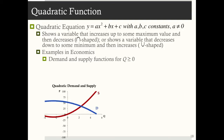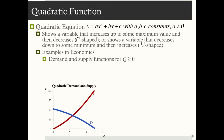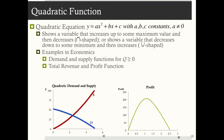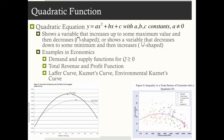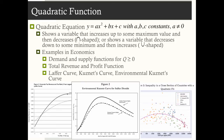We use quadratic functions to represent demand and supply, and for total revenue and profit. We also use it to show things like the Laffer curve, the Kuznets curve, which shows a relationship between a measure of inequality and GDP per capita, and the environmental Kuznets curve, which shows a relationship between some pollution measure and income per capita.